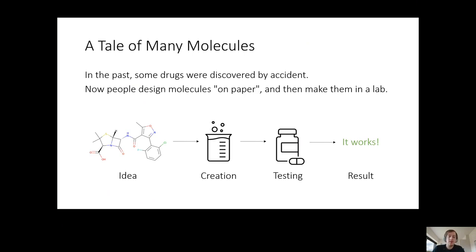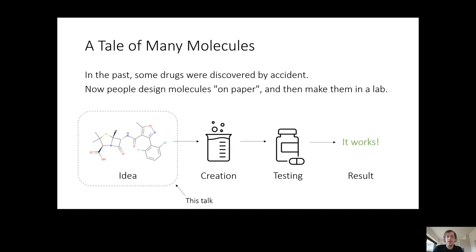But at the end of it, you get some sort of feedback — information that either it worked or it didn't work. In this talk, we will focus only on the first part, the creative part: how do we come up with these ideas? We assume that we have a big team of chemists and biologists, and any idea we give them, they can make it into reality, test it, and come up with some feedback.